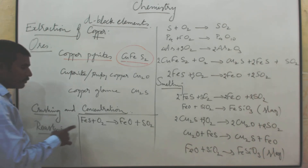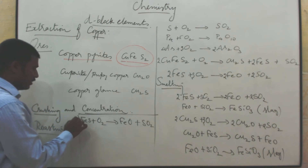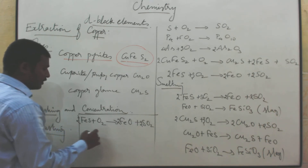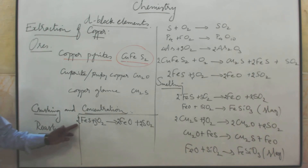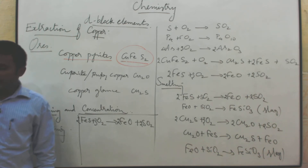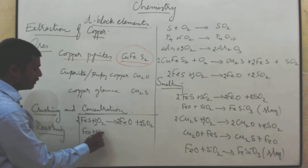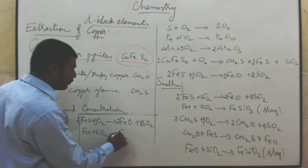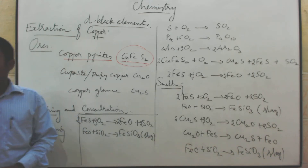How to balance? 1 iron, 1 iron; 1 sulphur, 1 sulphur; 3 oxygen and 2 oxygen — so put 2: 2 iron, 2 iron, 2 sulphur, 6 oxygen, so 3 oxygen. So: 2 FeS + 3O₂ → 2 FeO + 2 SO₂. Then FeO reacts with silica (SiO₂) to give the same slag, FeSiO₃.